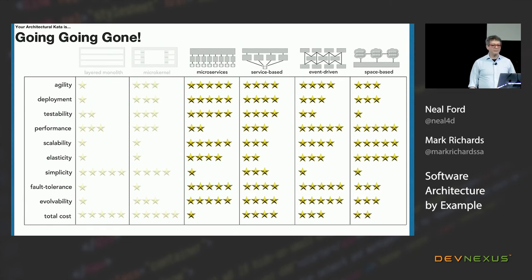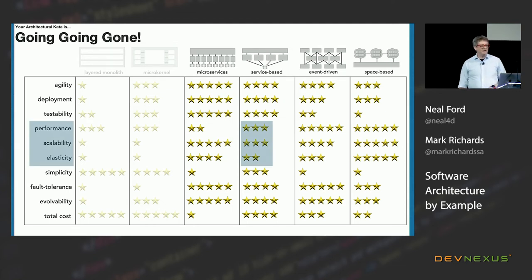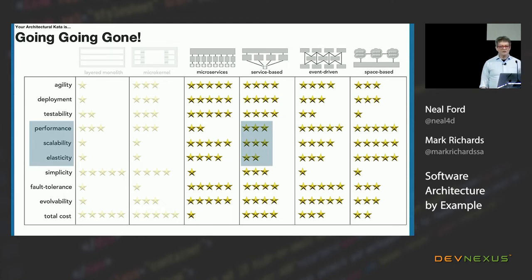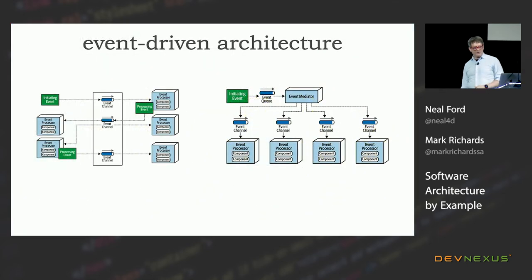How suitable is service-based for Going Going Gone? I've used it on the last two big projects because one database was plenty scalable enough and breaking it down further added a lot of complexity. It's often a pragmatic choice. But maybe not for Going Going Gone, because we really need different sets of architecture characteristics, and that's going to be hard against a single database. Performance, scalability, and elasticity in service-based are not as good as in microservices — and those are things we really need.